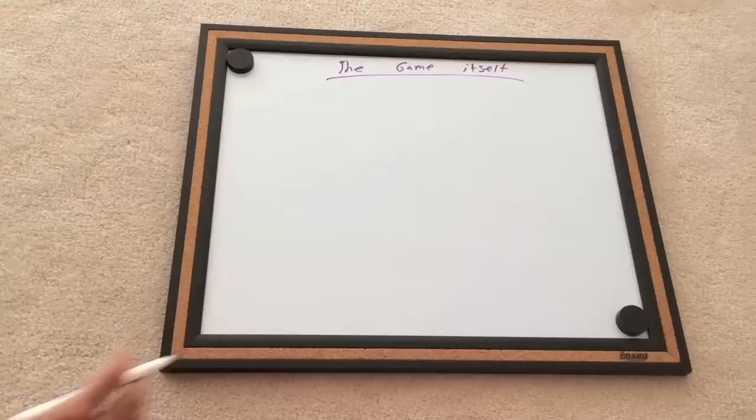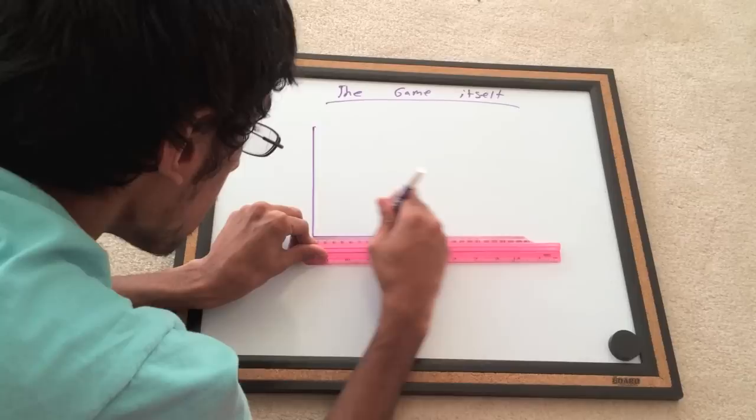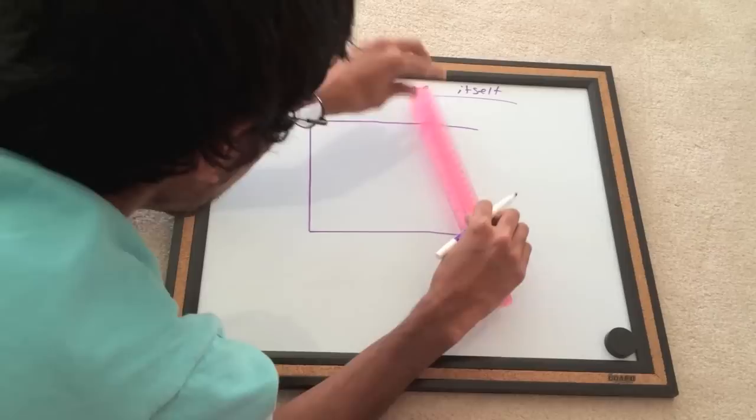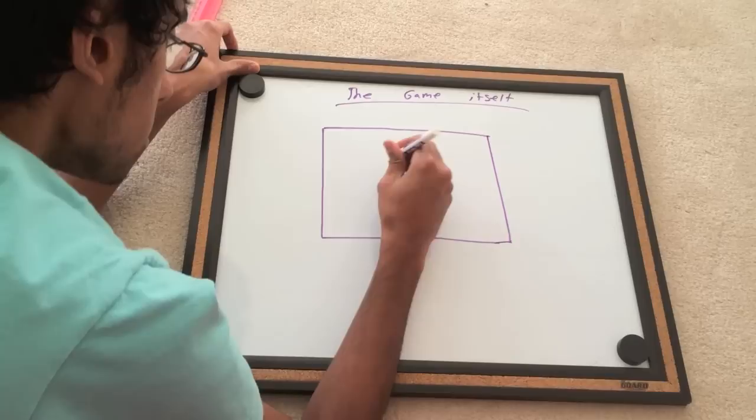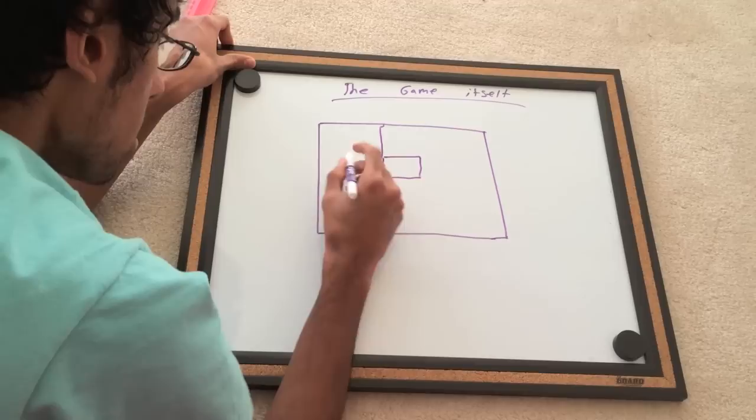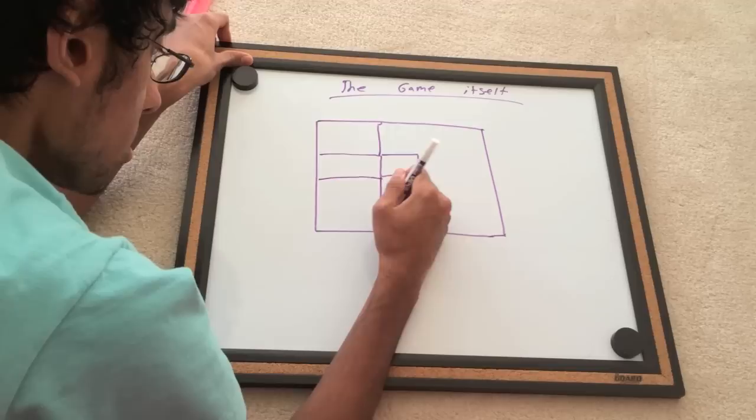On to the game itself. Dual N-Back, as noted before, was a game created to improve fluid intelligence and working memory. The game is made up of a 3x3 square with the center square missing. One square will light up and give a sound at the same time. The player, with respect to N, must note if the sound has been repeated or the position has been repeated.